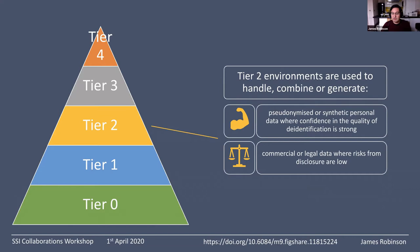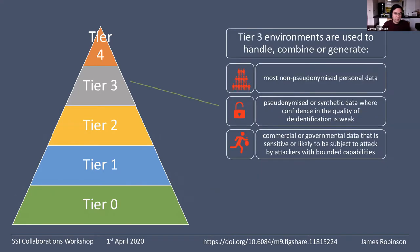At tier two, we have pseudonymized or synthetic personal data where we have strong confidence that the data can't be de-identified, but not absolute confidence. Or commercially or legally sensitive data where there is some risk from disclosing it, but it's low risk. Tier three would have most non-pseudonymized personal data, or pseudonymized data where the quality is weak, or commercial or government data that is likely to be subject to attack.